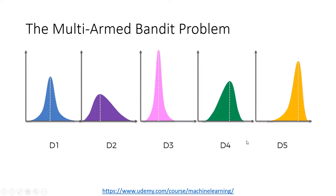These are the distributions for the machines. We can see that this machine is the best machine because it has the highest mode, mean, and median. These others are not as good. The algorithm is going to try to find this machine — at the same time that it explores, it's going to try to exploit the best machine.